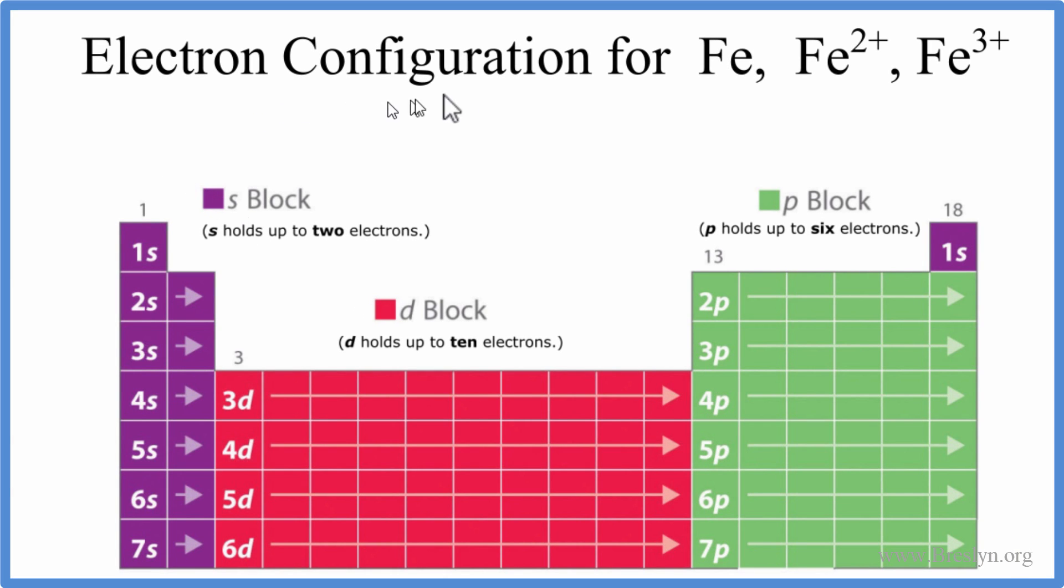In this video we'll write the electron configuration for iron Fe and the Fe²⁺ and Fe³⁺ ions. To do that we'll start with iron on the periodic table. Iron has an atomic number of 26, meaning it has 26 protons. In Fe on the periodic table, it's neutral without a plus charge, so the number of protons equals the number of electrons. You have 26 electrons to write the electron configuration for iron.